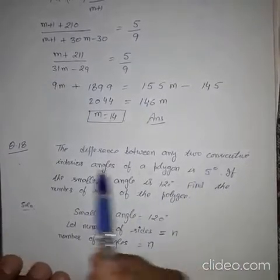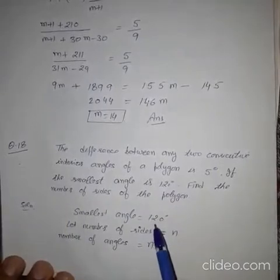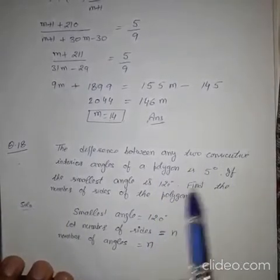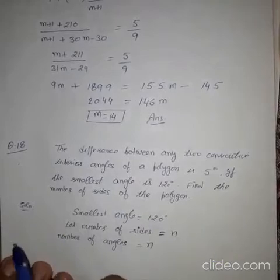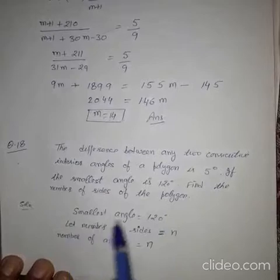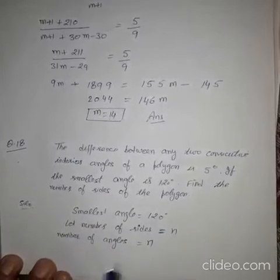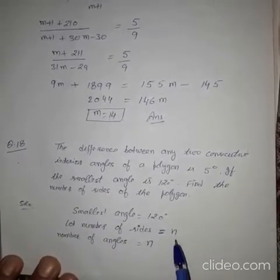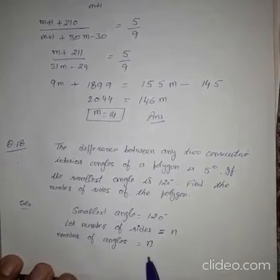Now the smallest angle is 120 degree. And all angles that will be greater to it. So that will be in increasing order you can say. And let the number of sides is equal to N. In a N sided polygon, the number of angles will also be N.